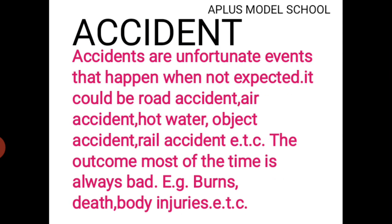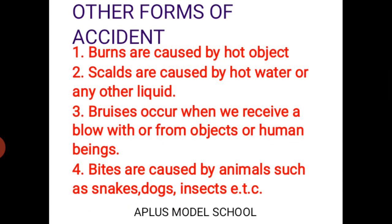The other forms of accidents are: one, burns — caused by hot objects; two, scalds — caused by hot water or any other hot liquid poured on your body; three, bruises — occur when you receive a blow from objects or human beings; four, bites — caused by animals such as snakes, dogs, insects, or any other wild animal biting somebody.